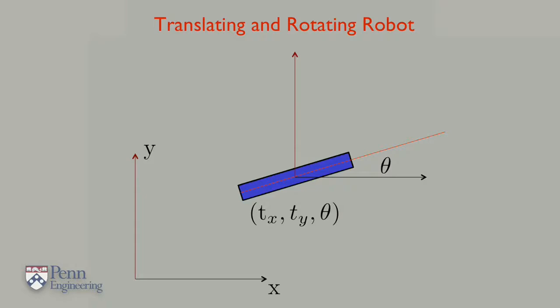We can denote the configuration of our robot with a tuple, tx, ty, and theta, where tx and ty still denote the position of a reference point in the plane, and theta denotes the applied rotational angle in degrees.